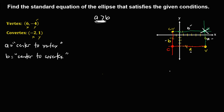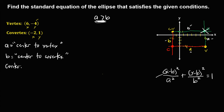The formula for a horizontal ellipse is: (x − h)² / a² + (y − k)² / b² = 1, where a² is the denominator of x². To solve for the standard equation, we need to locate the coordinate of the center first. Since the center is the point of intersection, x is equal to negative 2 and y is negative 4. So the coordinate of the center is (−2, −4).